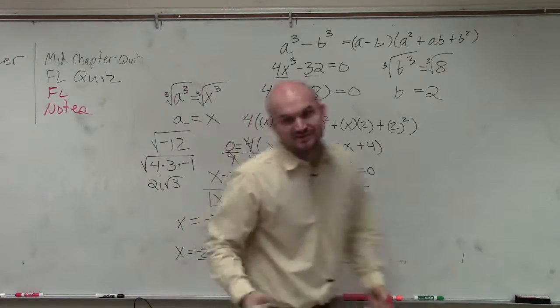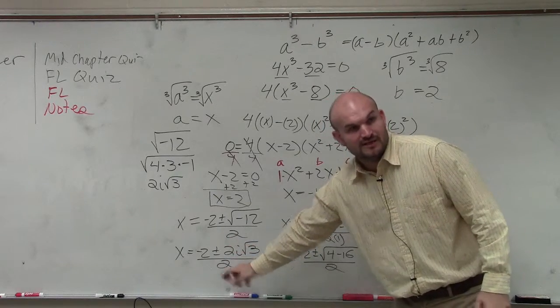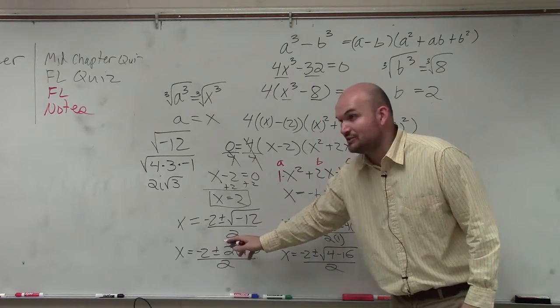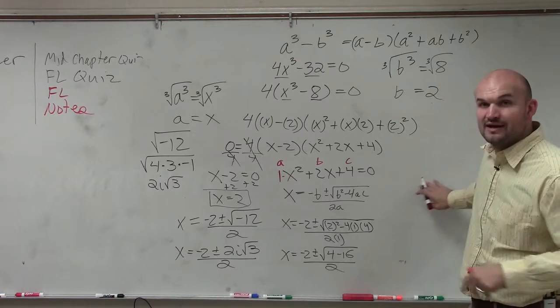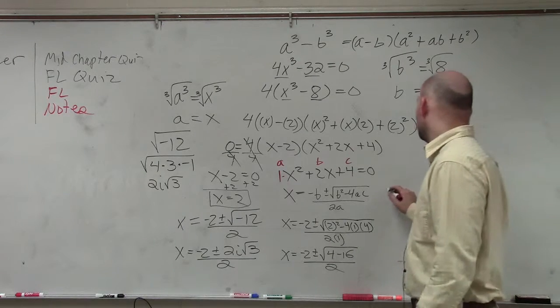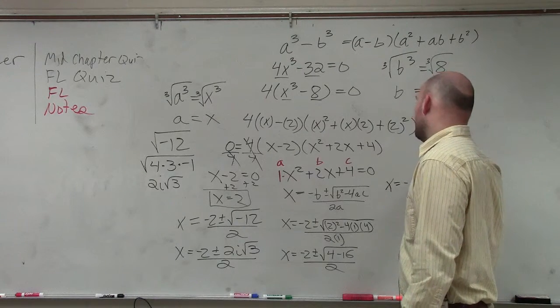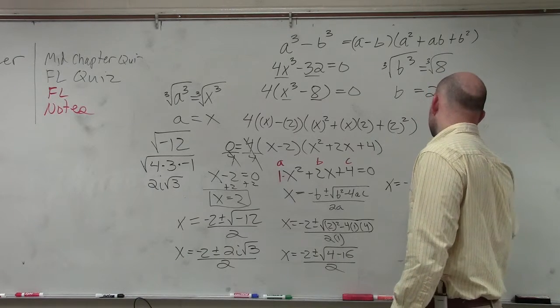So I have x equals negative 2 plus or minus 2i times the square root of 3 all over 2. However, can my 2 divide into both of those terms? Can my 2 divide into negative 2 and 2 divide into 2i? Yes. So my final answer is x equals negative 1 plus or minus i square root of 3.